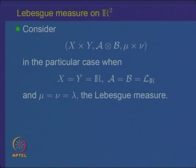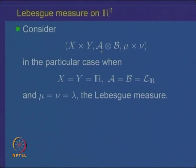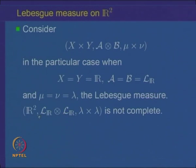Let us recall. We had defined the product measure space. Given measure spaces (X, A, μ) and (Y, B, ν), we defined the product sigma algebra A×B on the product space X×Y and the product measure μ×ν. Today, we will look at the particular case when X = Y = the real line, the sigma algebra A = B = the sigma algebra of Lebesgue measurable sets on the real line, and μ = ν = the Lebesgue measure λ. This gives rise to the product measure space R², with sigma algebra being Lebesgue measurable sets × Lebesgue measurable sets, and product measure λ×λ.